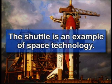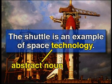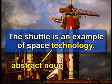On the other hand, an abstract noun names an idea, a concept, a quality, or a feeling. Here's an example of an abstract noun in the same sentence: The shuttle is an example of space technology. Technology is an abstract noun. It refers to something that cannot be directly experienced through the five senses.